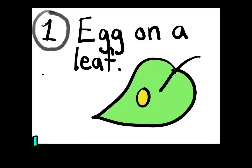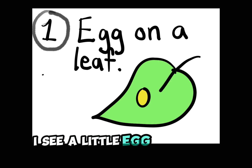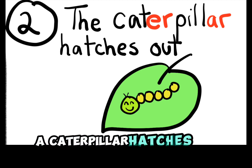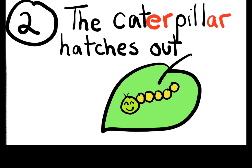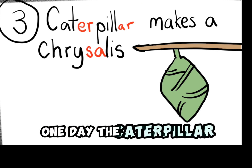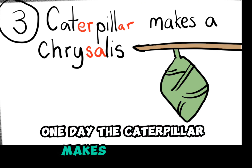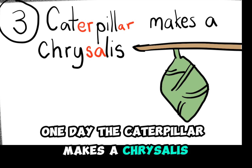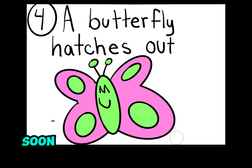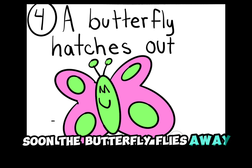I see a little egg on a leaf. A caterpillar hatches out. One day, the caterpillar makes a chrysalis. A butterfly comes out. Soon, the butterfly flies away.